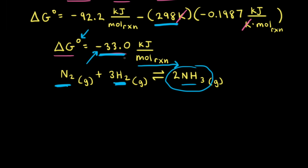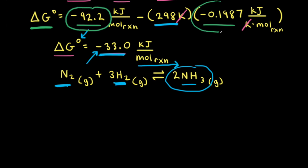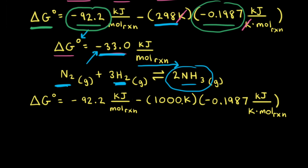Let's do another calculation for this same reaction at a different temperature: 1000 Kelvin. Even though the value for ΔG⁰ is highly dependent on temperature, the values for ΔH⁰ and ΔS⁰ are not as dependent on temperature. Therefore, we're going to assume that these values for ΔH⁰ and ΔS⁰ don't change, and we'll use the same ones at the higher temperature of 1000 Kelvin.